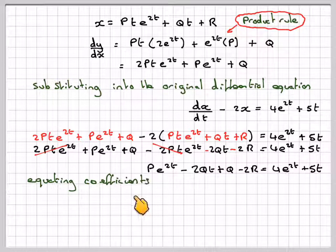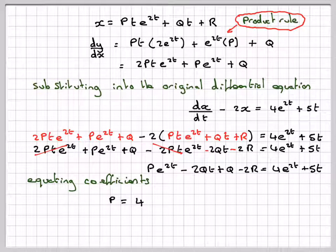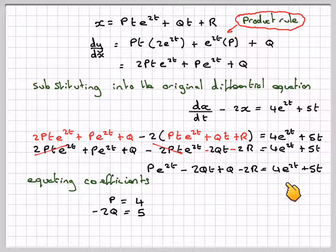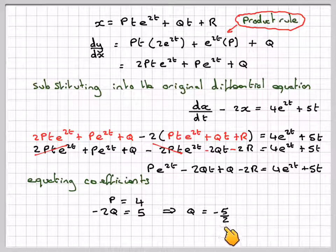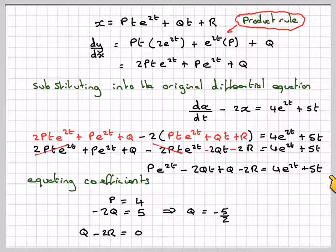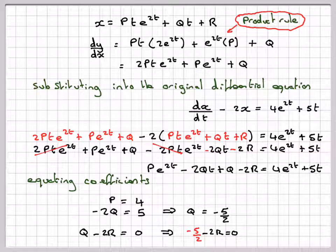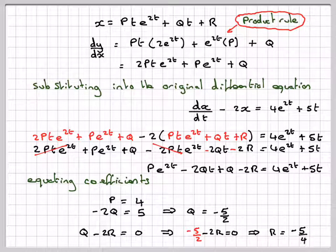Equating the coefficients, we're going to have that p must be equal to 4, and that minus 2q must be equal to 5, which gives q is minus 5 over 2. And then we're going to have q minus 2r must be equal to 0 because there's no constant term on this side. So that gives minus 5 over 2 minus 2r is equal to 0, and that will give r has to be equal to minus 5 over 4.